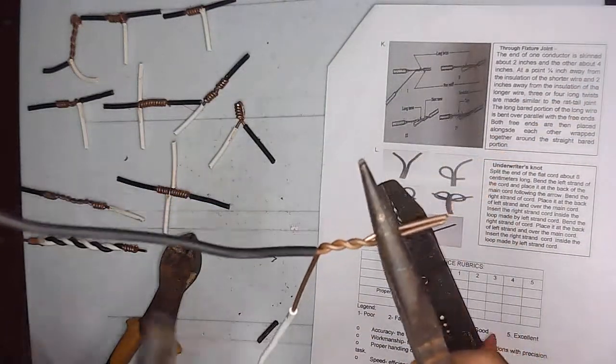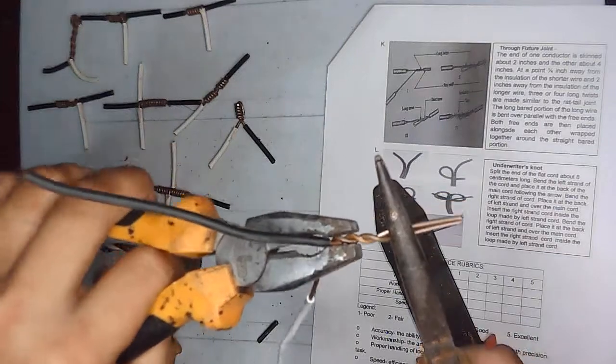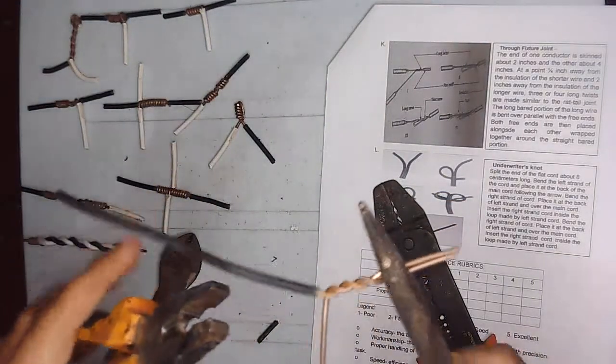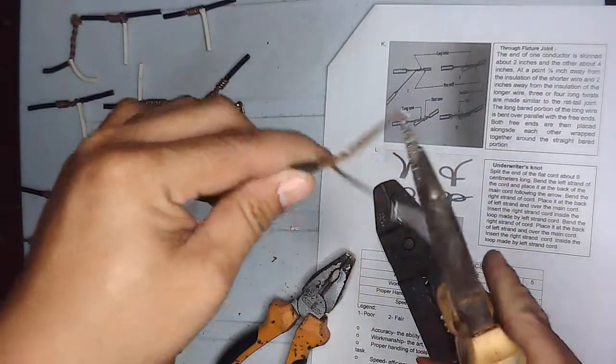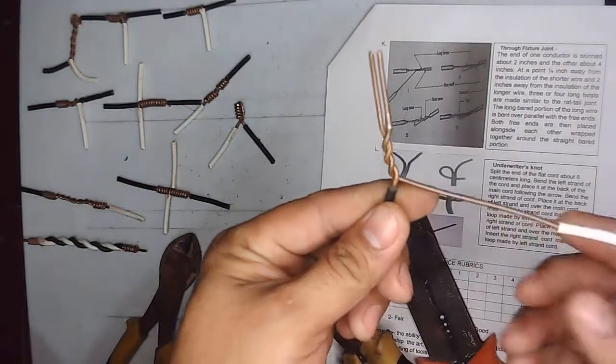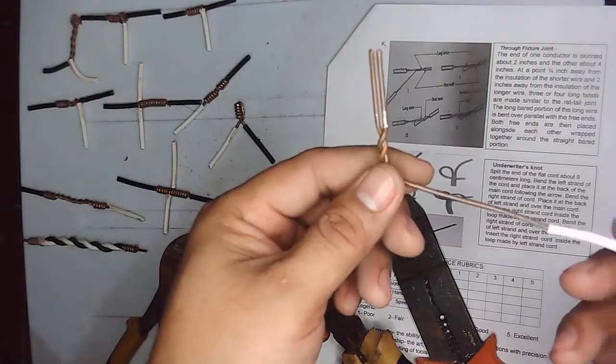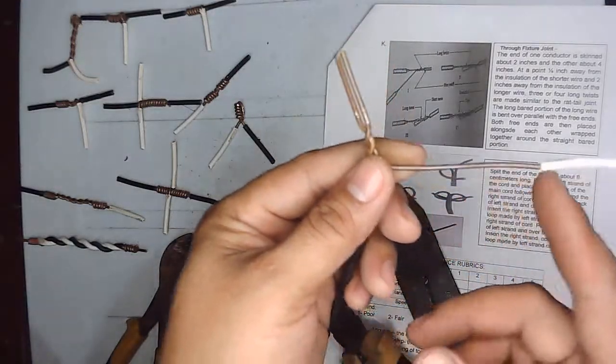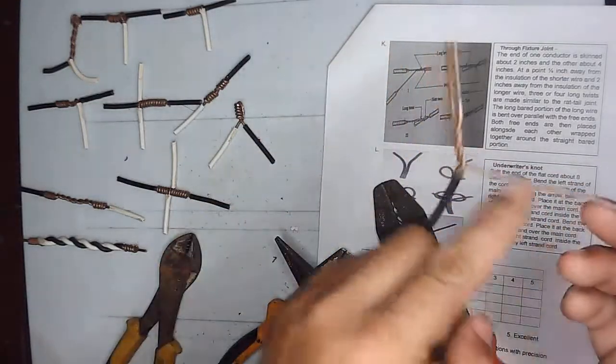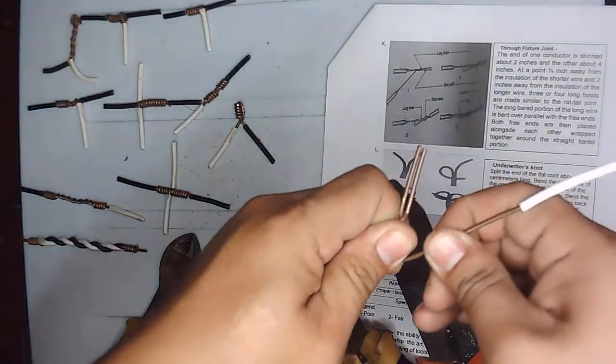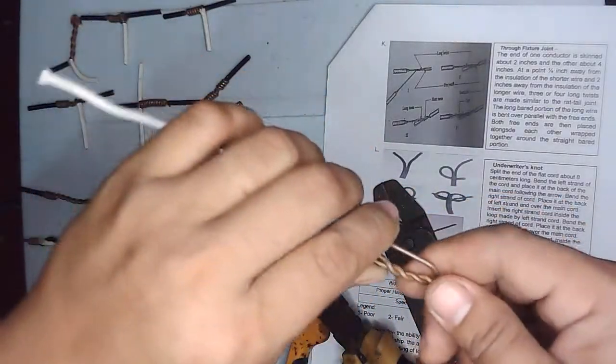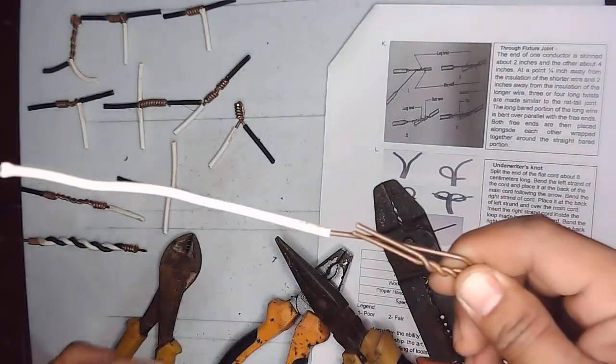Okay, so let's tighten. You see, okay, so it is twisted already like a rat tail, so formed like this. Then afterwards we will bend this one, this longer wire, on the other side just like this.